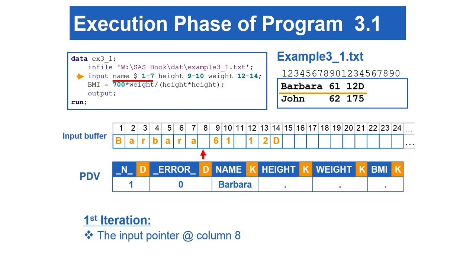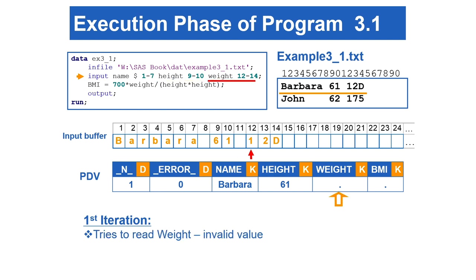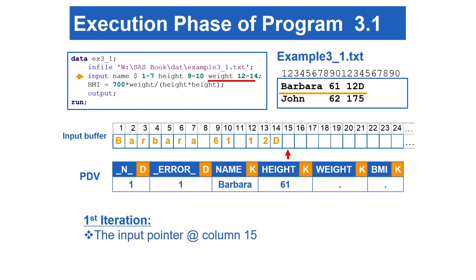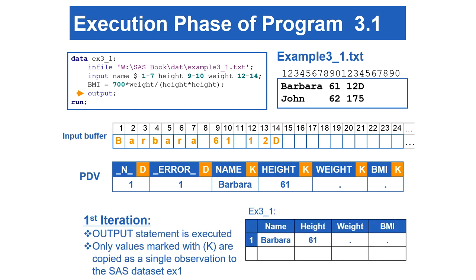Then the input pointer points at column 8. Next, SAS copies the values from column 9 to 10 from the input buffer to the height slot in the PDV. Then the input pointer points at column 11. The value for the weight variable is entered as 12D, which is an invalid numeric value. Therefore, the weight variable is set to missing. The _ERROR_ variable is set to 1 at this point, and an error message is sent to the SAS log indicating the location of the data error. The input pointer then points to column 15. Next, the assignment statement is executed and BMI remains missing since operations on a missing value result in a missing value. When the output statement is executed, only values from the PDV marked with K are copied as a single observation to the output dataset EX3_1.